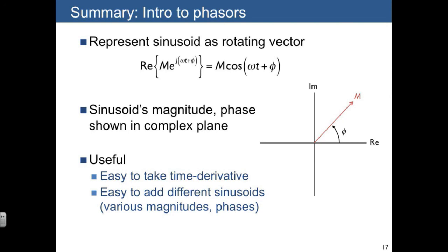Since we're only interested in m and phi, we can just as easily just draw m and phi in the complex plane. And that's going to be a shorthand for the starting point of our vector that's going to be rotating around. How is this useful? We said it's useful for taking time derivatives and also for adding different sinusoids, which is the two main operations that we end up making when we solve for particular solutions.